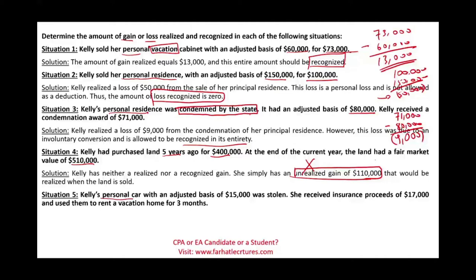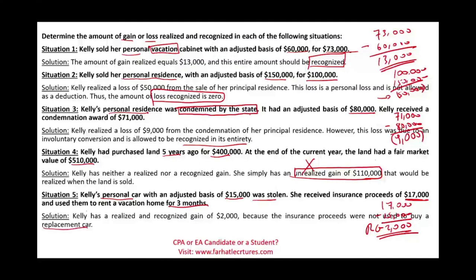Kelly's personal car with an adjusted basis of $15,000 was stolen. She received insurance proceeds of $17,000 and used them to rent a vacation home for three months. The realized gain is $17,000 received minus the $15,000 adjusted basis, equal to $2,000. The property was involuntarily taken — a theft, an involuntary conversion. However, she did not replace the asset; the insurance proceeds were not used to buy a replacement car. Therefore, the recognized gain is $2,000.